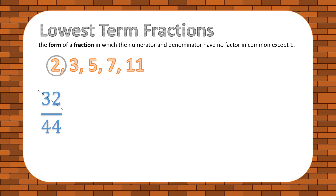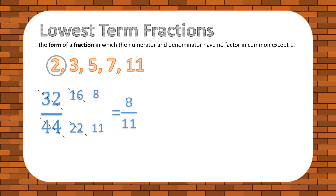32 divided by 2 is 16, and 44 divided by 2 is 22. The common factor is again 2 for 16 and 22. 16 divided by 2 is 8, and 22 divided by 2 is 11. There is no common factor for 8 and 11 except 1. Therefore, the lowest term for 32 out of 44 is 8 out of 11.